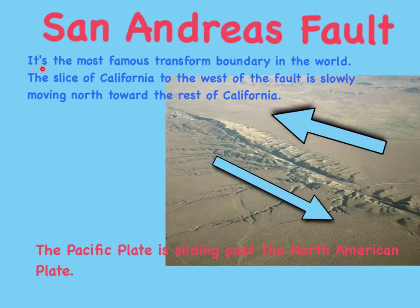The San Andreas Fault is the most famous transform boundary in the world. The slice of California to the west of the fault is slowly moving toward the rest of California. The Pacific Plate is sliding past the North American Plate.